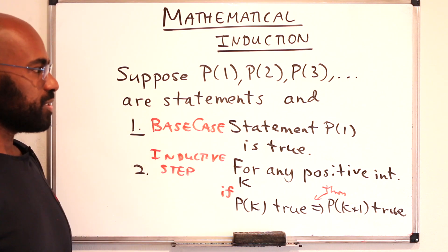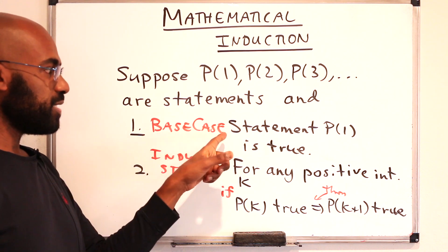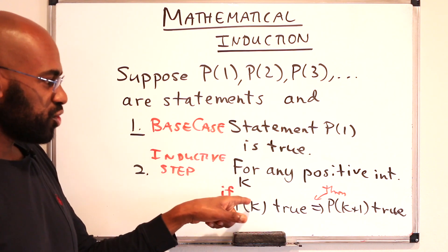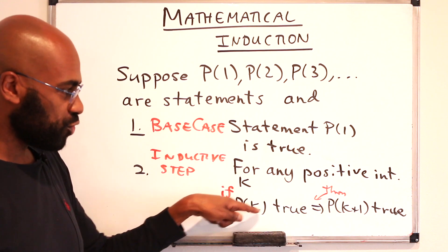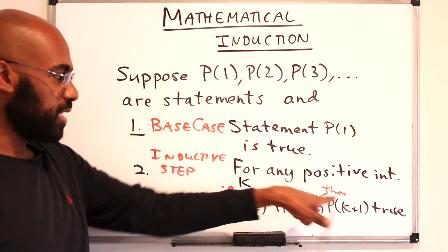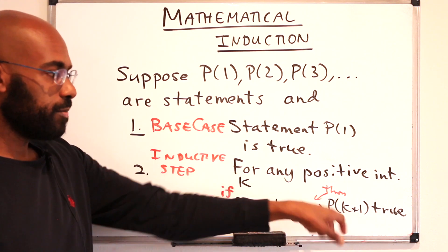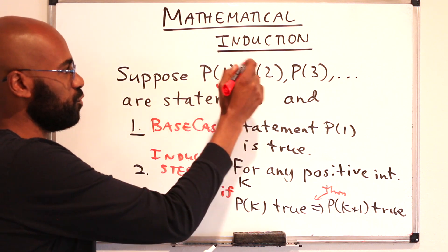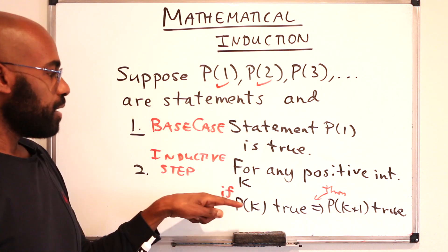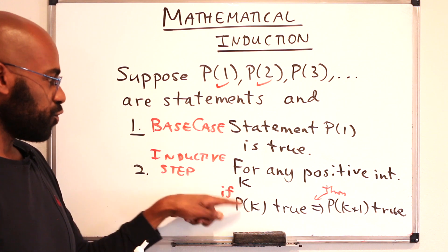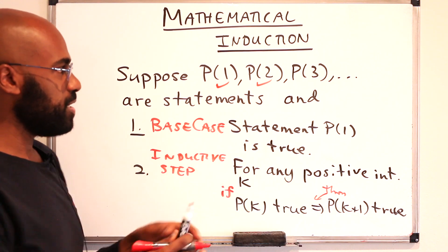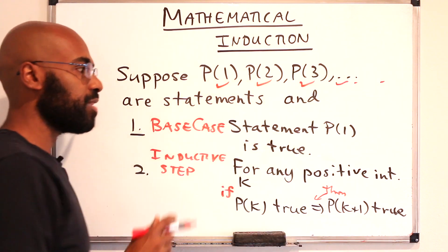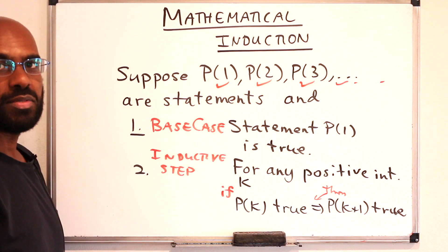Let's analyze what happens as a consequence. From the base case, p1 is true. Now for any positive integer k, we have the inductive step. So if p1 is true, that means p2 is true, setting k equal to 1. But now p2 is true, so by the inductive step again, p3 is going to be true. And we keep cascading to get that all of our statements are true.